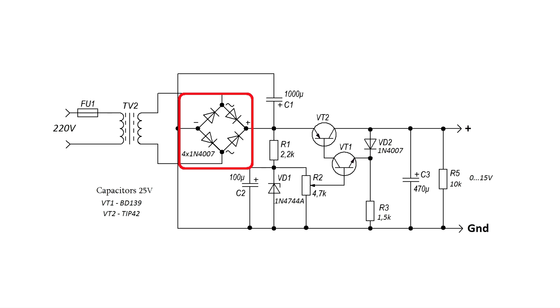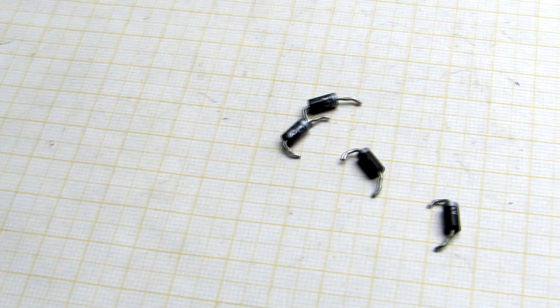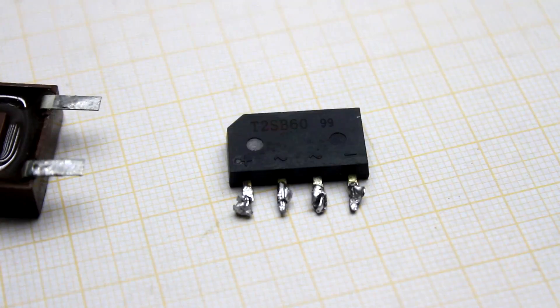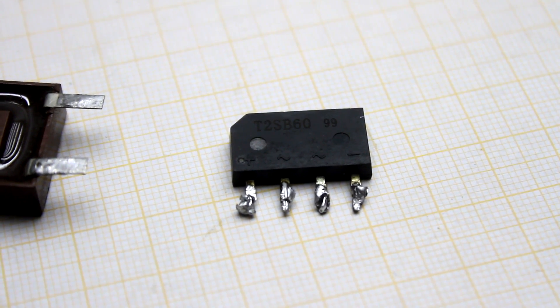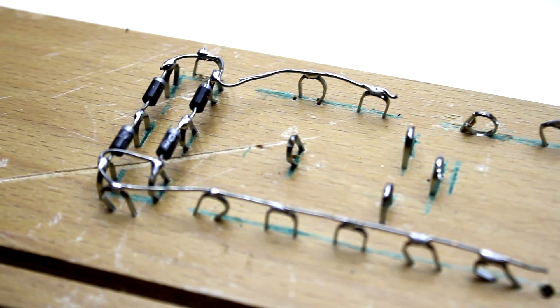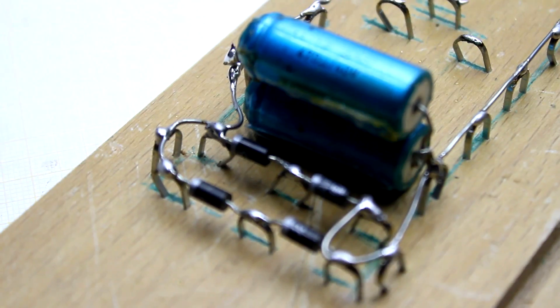The diode rectifier is assembled from 4 diodes with a current of 1A or you can use a ready-made diode rectifier. I decided not to make a PCB; here the components are arranged in a more original way.